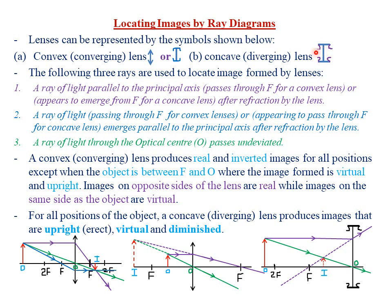For the case of concave lenses, which are also called diverging lenses, we use this particular symbol when drawing ray diagrams. For concave or diverging lenses, we have incident rays, but upon refraction on the lens the rays are being diverged away from each other — this one is moved upwards while this one is moved downwards. After refraction, the rays are diverged, which is why concave lenses are also called diverging lenses.